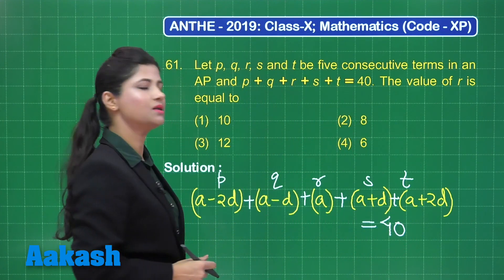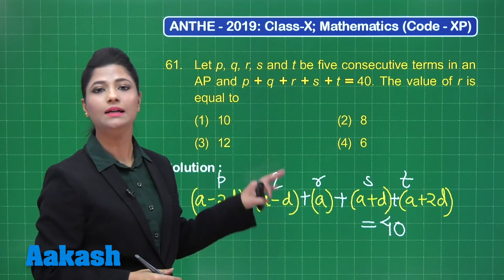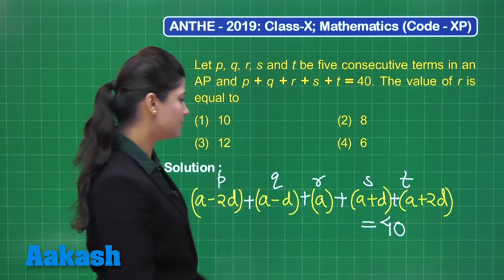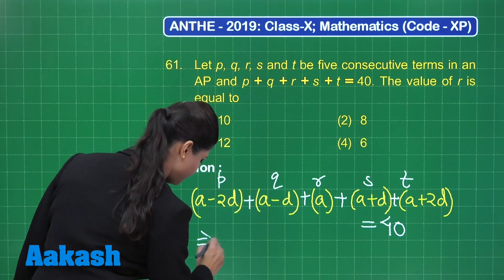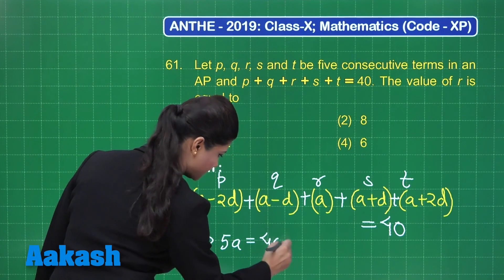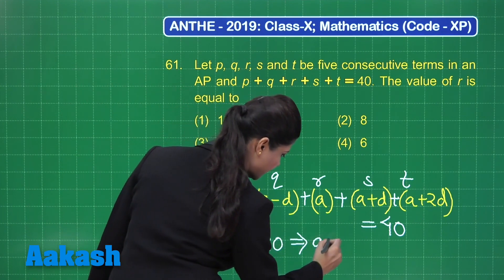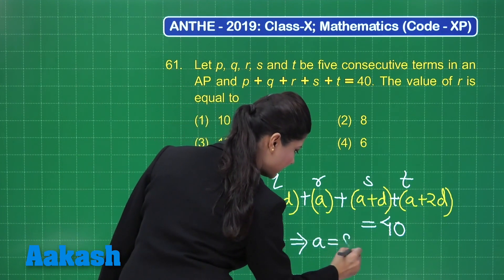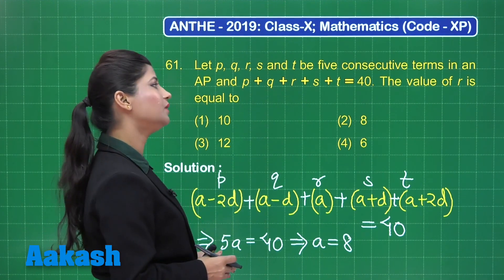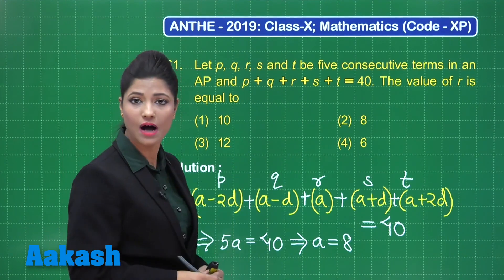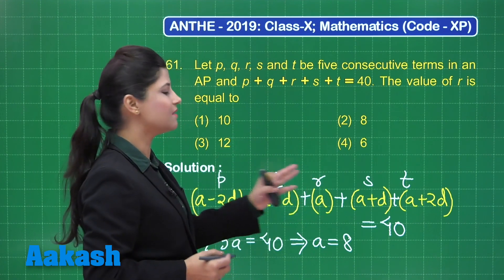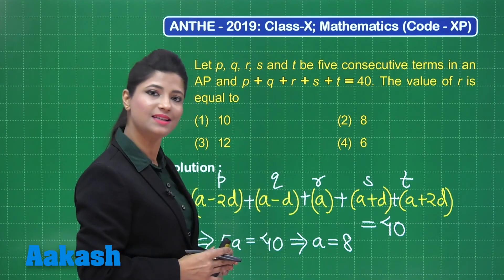If we consider this equation, all the terms of D will get cancelled and the equation simplifies to 5A equals 40, which gives the value of A as 8. In this question we need to figure out the value of R, and here R is A, so the value of R is 8.